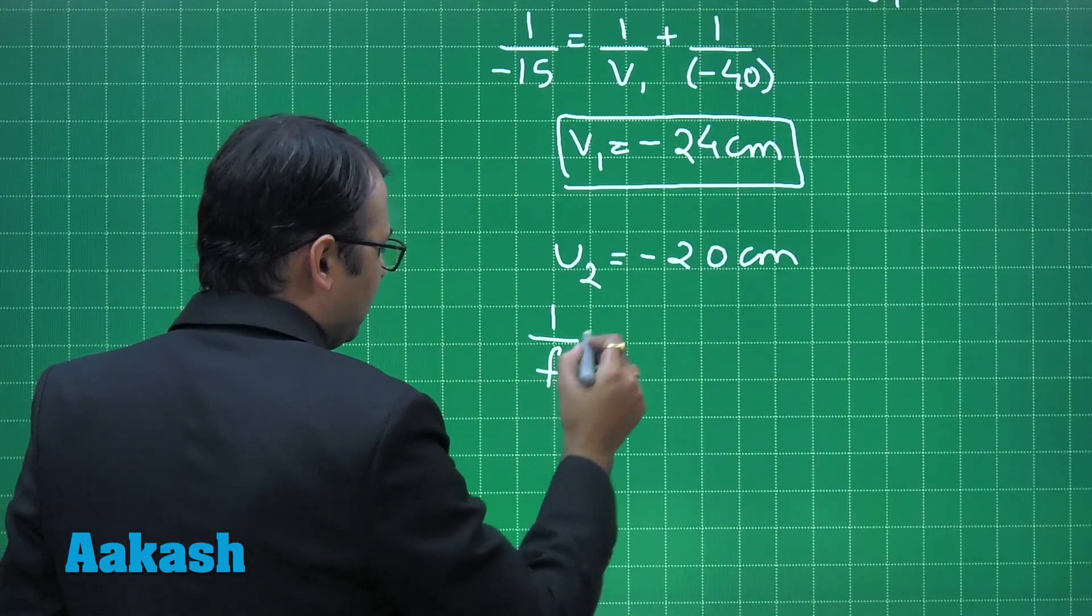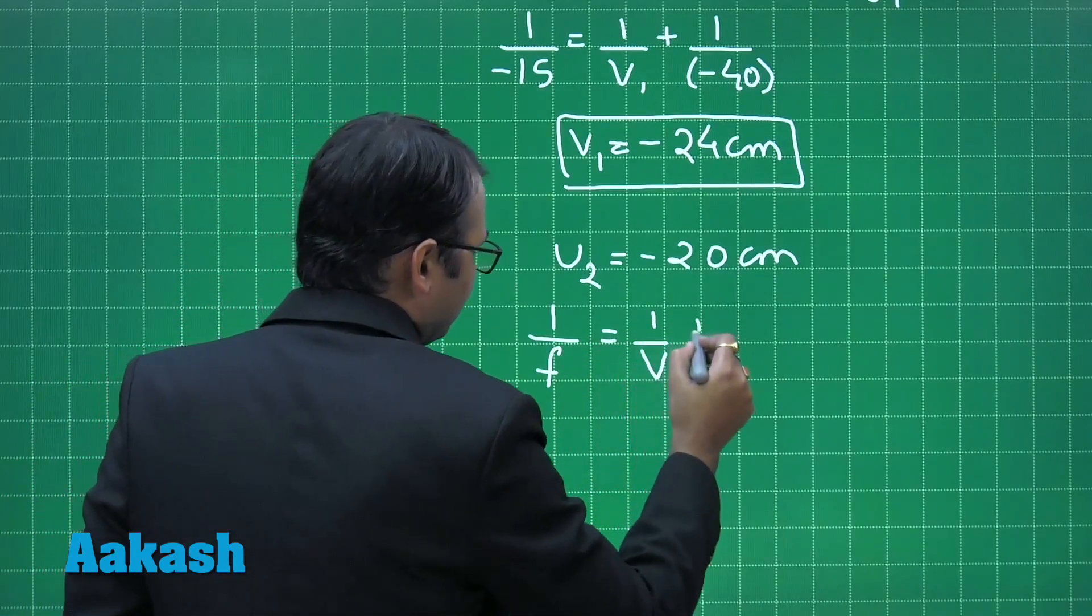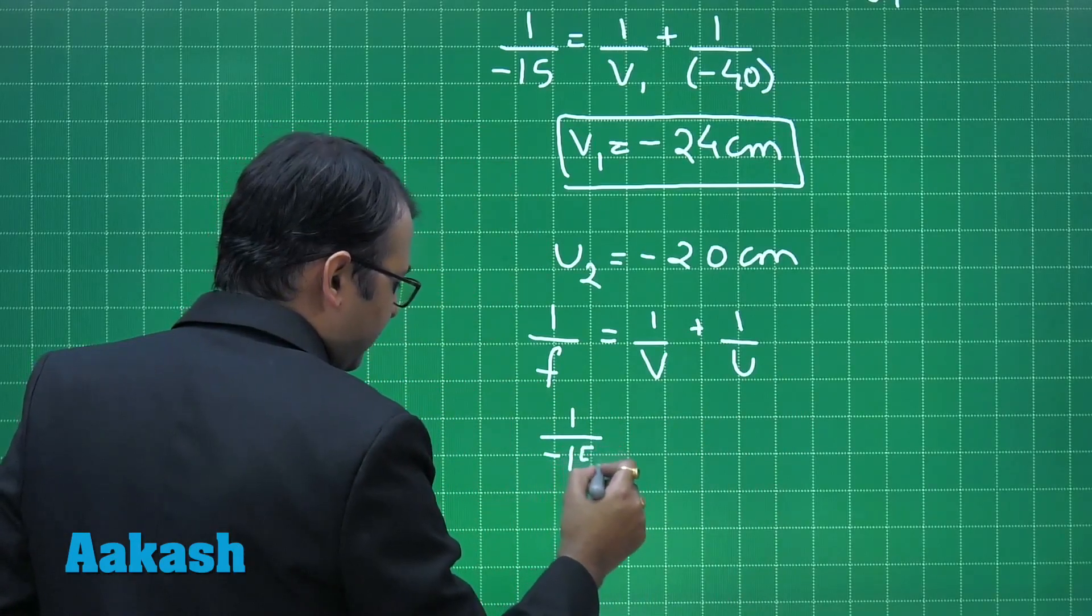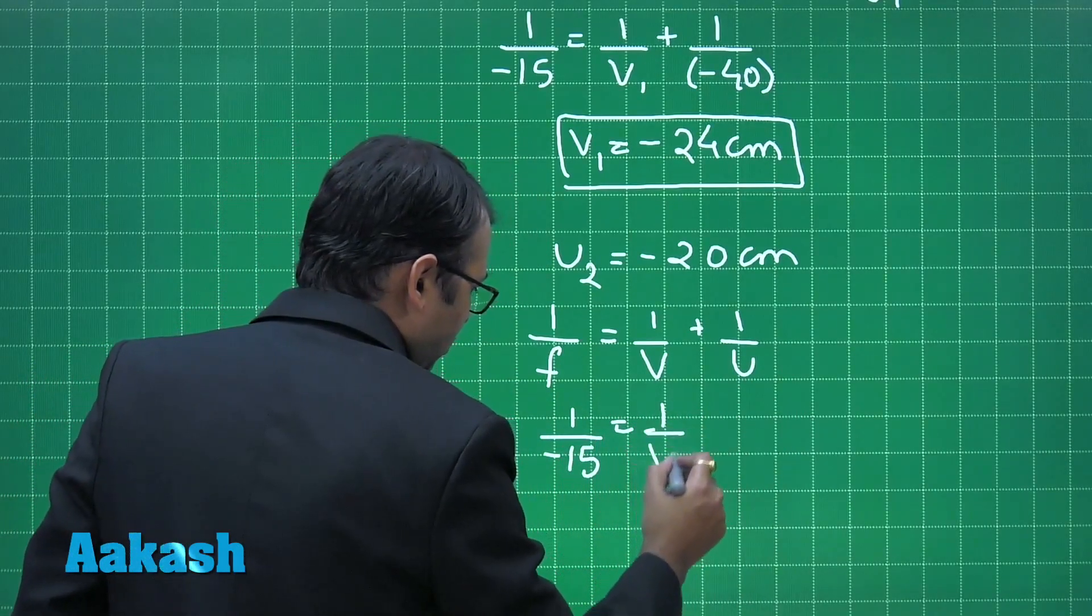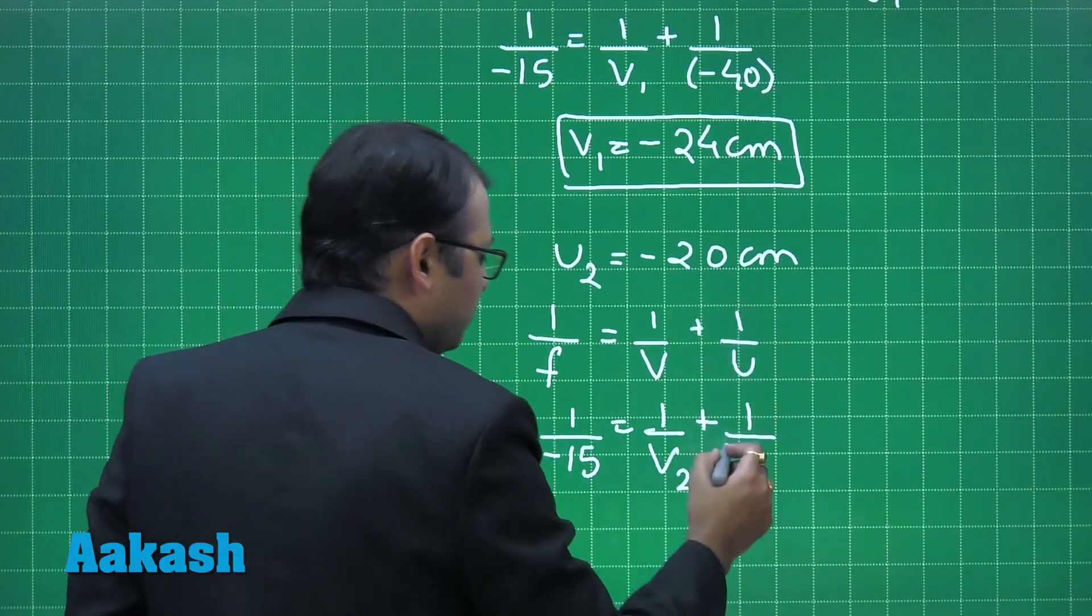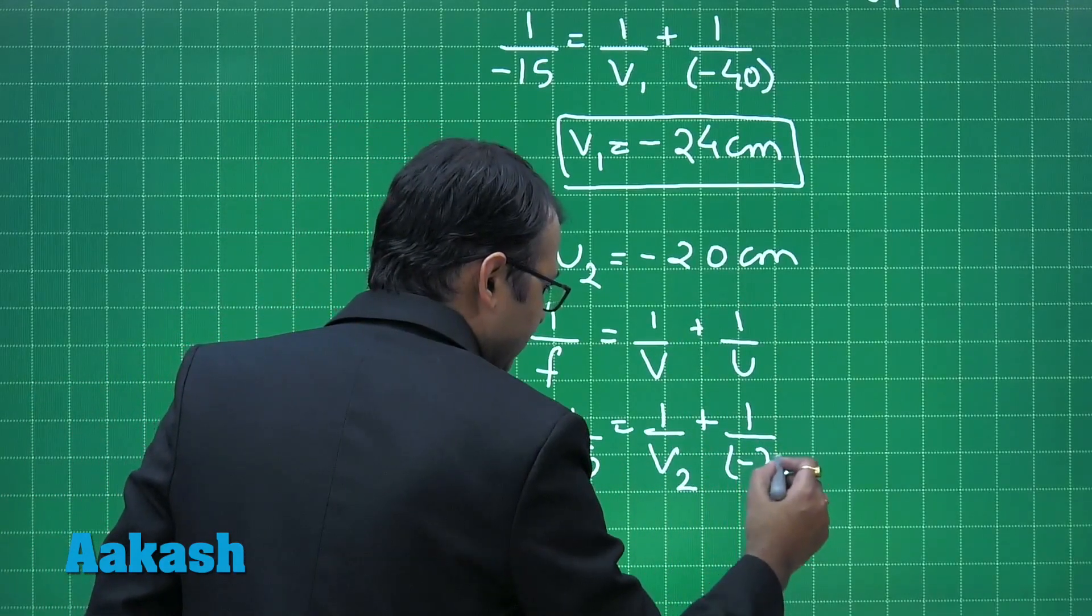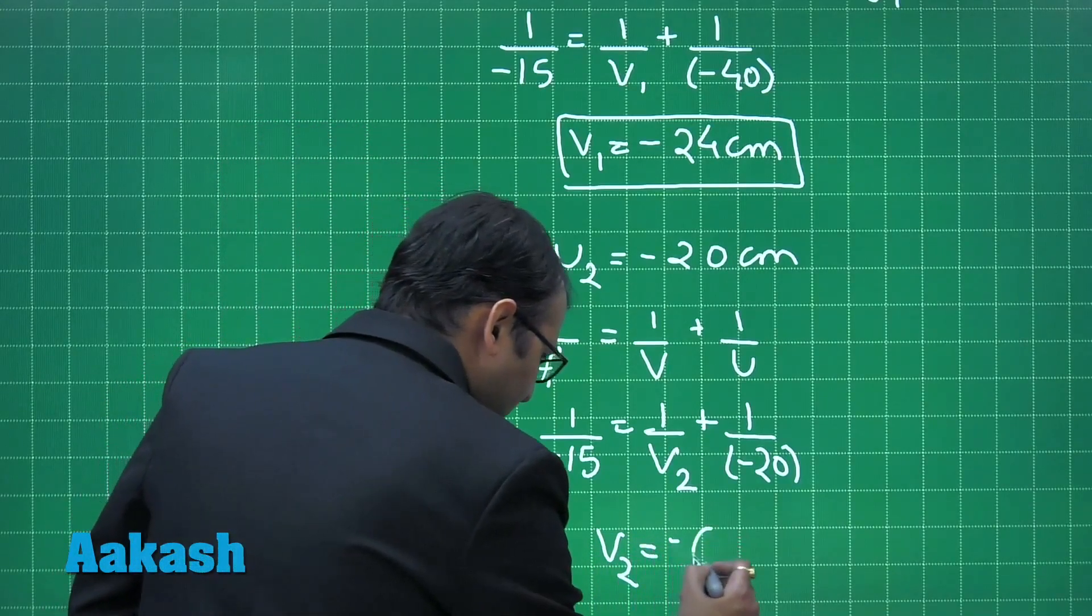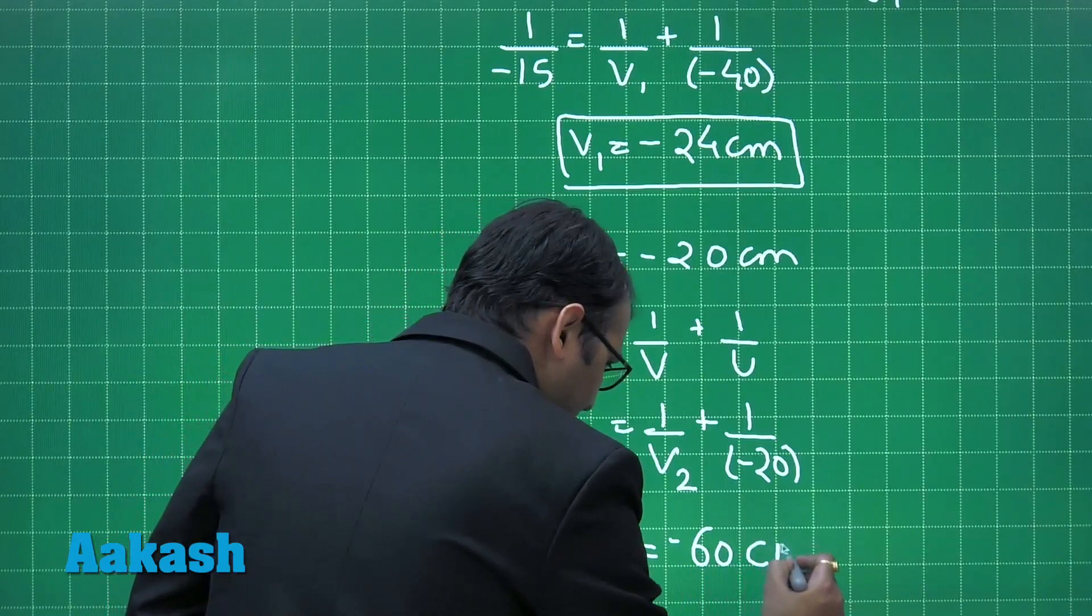Again the mirror is the same, so we apply the mirror formula. So 1 upon minus 15 equals the new image position v2 plus 1 upon the new object position minus 20. So v2 we get as minus 60 cm.